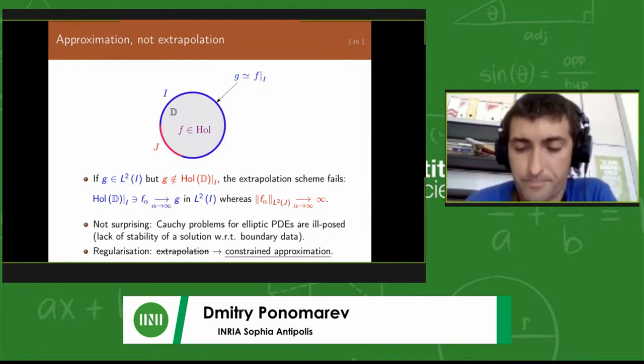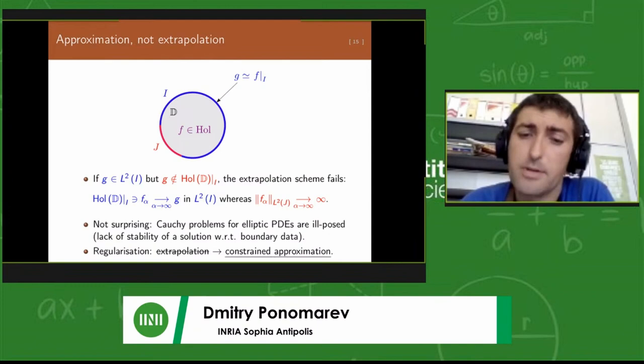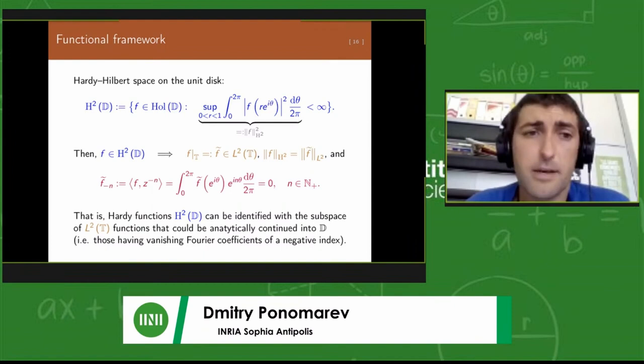It will fail in the sense that the value of the extrapolant on the j part of the boundary will go to infinity as the limiting parameter alpha increases. This is not very surprising because Cauchy problems for elliptic PDEs are known to be ill-posed. There's a lack of continuous dependence of the solution with respect to boundary data.